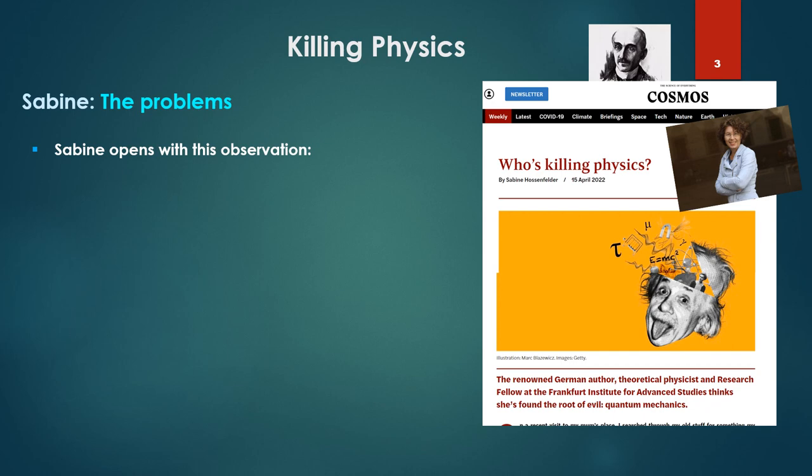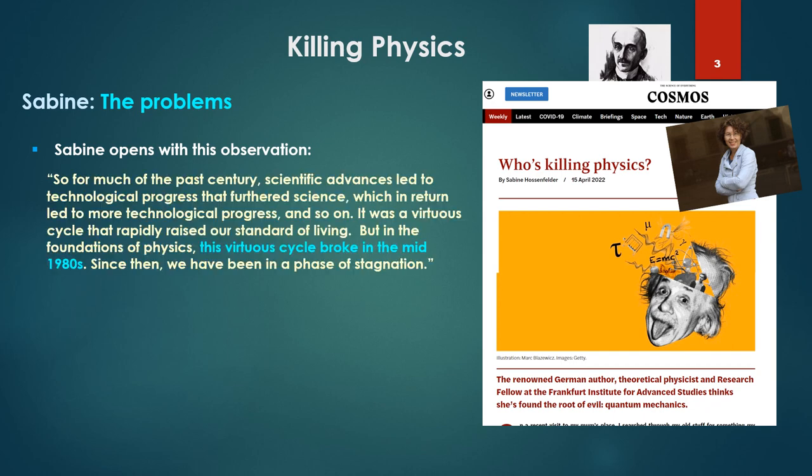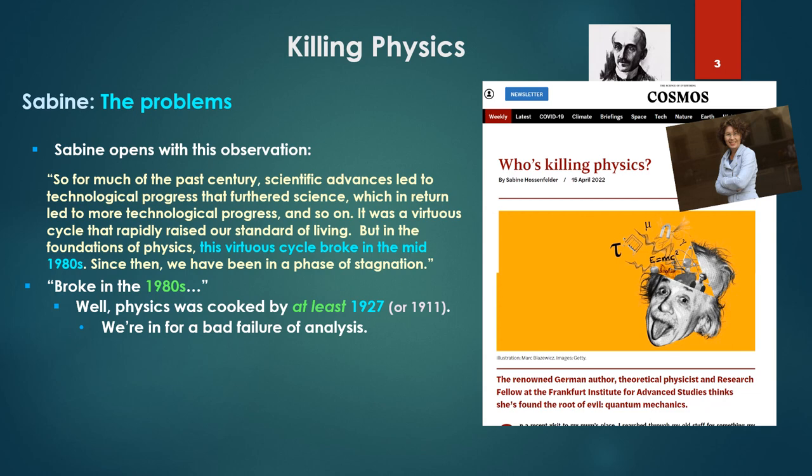Sabine opens with this observation. For the past century, scientific advances led to technological progress that furthered science, which in return led to more technological progress. It was a virtuous cycle that rapidly raised our standard of living, but in the foundations of physics, this virtuous cycle broke in the mid-1980s. Since then, we have been in a phase of stagnation. Broke in the 1980s. Well, physics was dead by at least 1927, maybe even 1911.